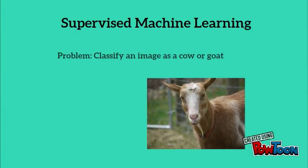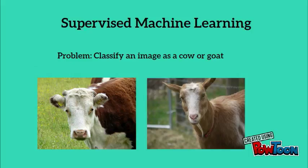Now let's look at a specific example of supervised machine learning. In this case, we're trying to classify an image and determine whether it is a cow or a goat.